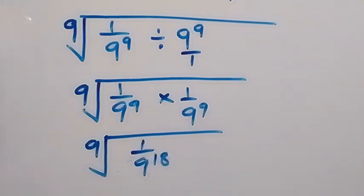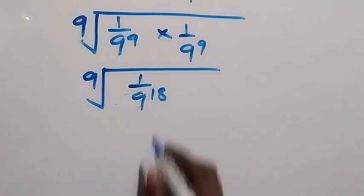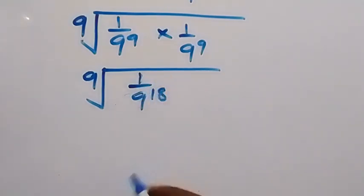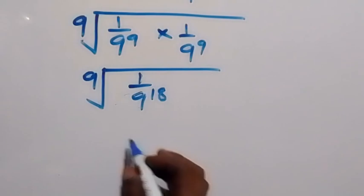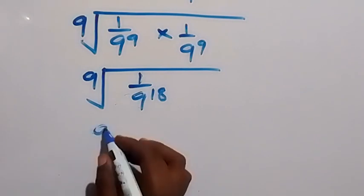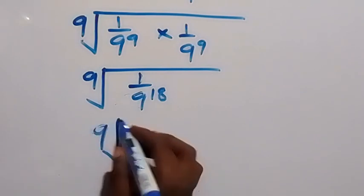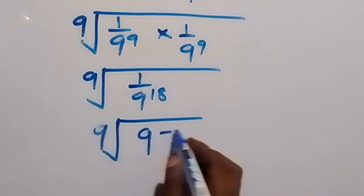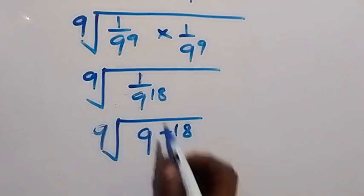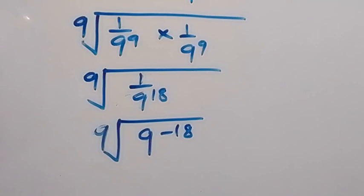Therefore, from here we can equally write 1 over this as raised to power minus 18. So we have ninth root of 9^(-18), same thing as 1 over 9^18.